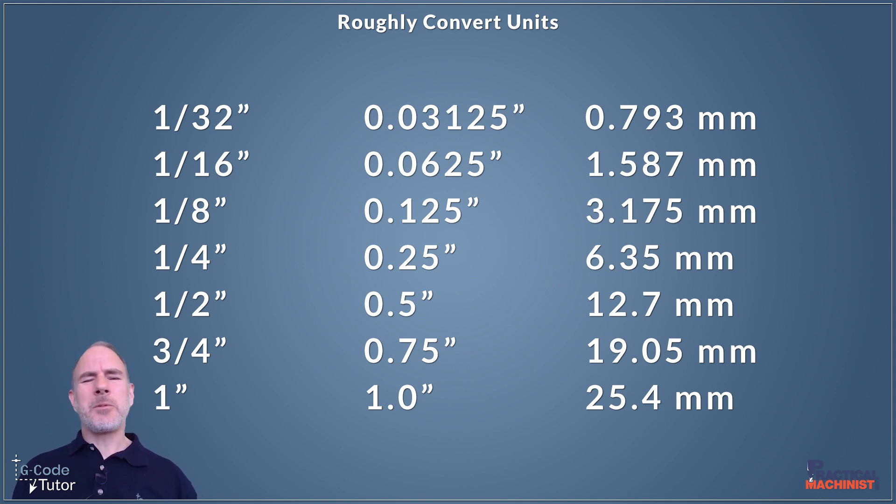So why would we use this? Quite often we might be trained in imperial and then go to a different company and they're doing contract work for a European company, for example, and they work in metric. Switching between imperial and metric when you've already been working in imperial for many years can often be a struggle. But by using my quick reference here and remembering these seven numbers and seven conversions, it helps us very quickly to picture in our minds what the metric equivalent is to imperial. It also works backwards. If you're used to working in metric and need to work in imperial halfway through your career, you can use this to convert metric to imperial.